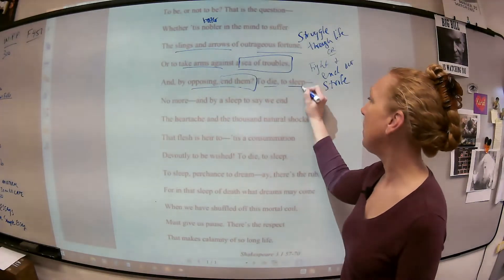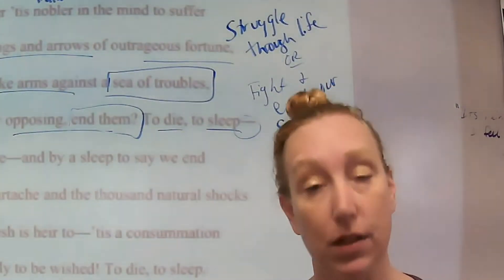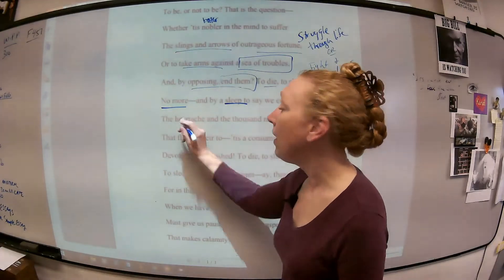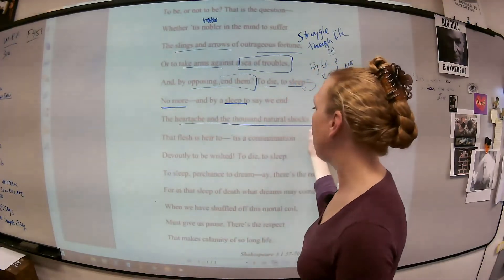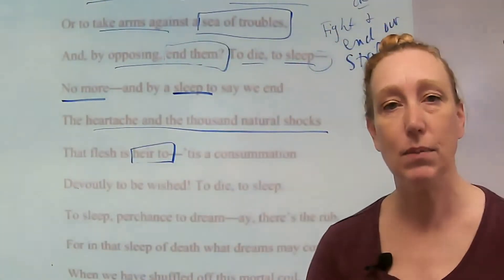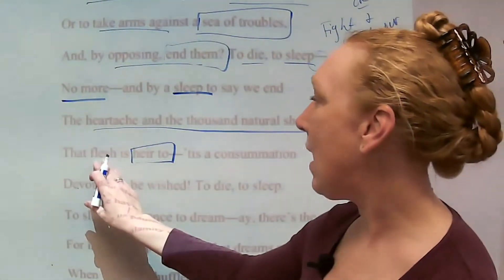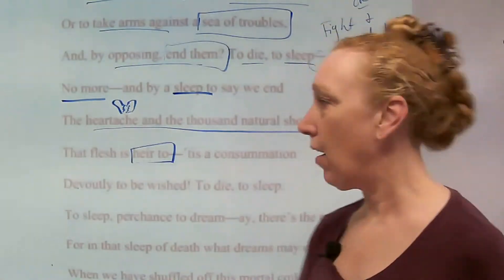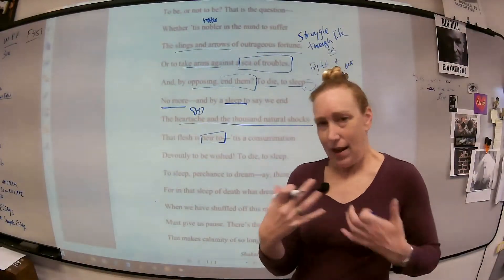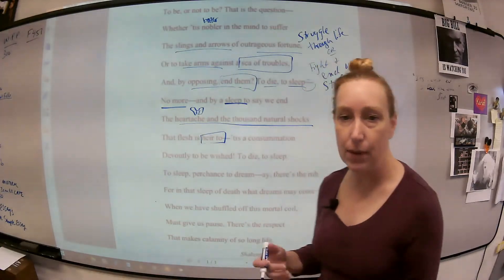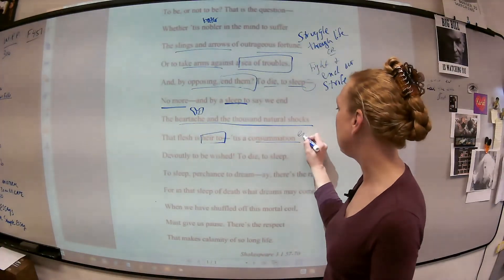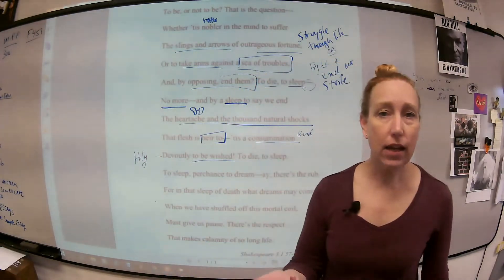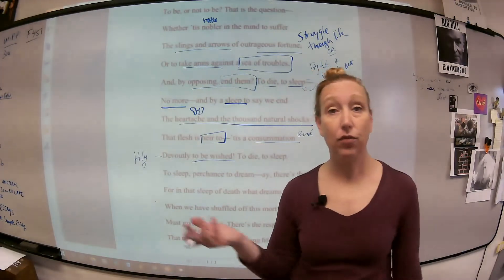And then he says to die, to sleep. What do we know about dashes? Dashes are interruptions. So he interrupts himself. He's like, no more. It's not just sleep. We end the heartache and thousand natural shocks that flesh is heir to. To be heir to something means you're going to inherit it. So our body is going to experience a lot of heartaches. This is a janky, broken heart and natural shocks. Think about your body constantly being shocked by all the things that happen in life. This is a consummation, an end. Devoutly to be wished. Devoutly means holy. So it's a holy end, to wish that the struggles and suffering and pain of life would end.